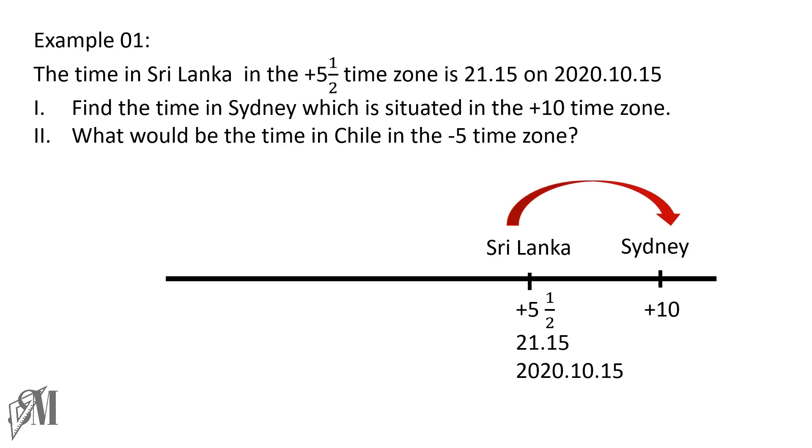Now you should clearly see from +5.5 to +10, the duration is 4.5 hours: 6.5, 7.5, 8.5, 9.5, and 10. That is 4.5 hours. So what we have to do is add 4.5 hours to the time in Sri Lanka to get the time in Sydney. That is 21:15 + 4:30, that is 25:45. This is greater than 24, so we have to subtract 24 from that to get the exact time in Sydney. That is 1:45.